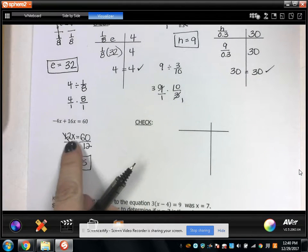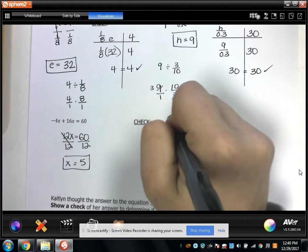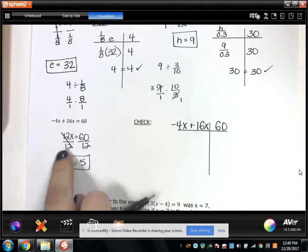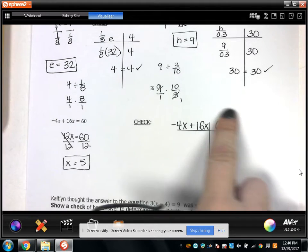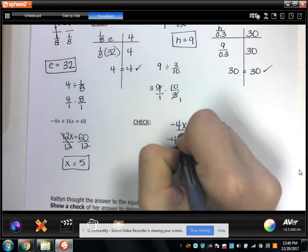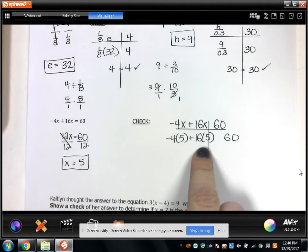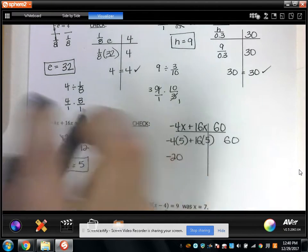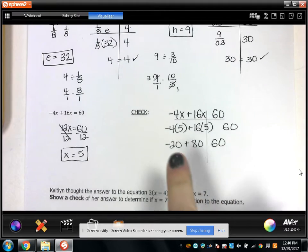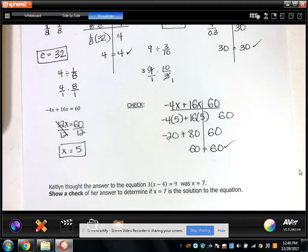Now when you do your check here, you don't want to write 12x equals 60 on this check line. You want to write negative 4x plus 16x equals 60. The reason you want to do that is maybe when you're solving this, you combine like terms incorrectly. The check is supposed to tell you if you made any mistakes. So you want to start with the original equation. Plug in 5 two times. Notice I didn't combine like terms because that could have been where I made my mistake. Then evaluate. So 16 times 5 is 80. Then say to myself, negative 20 plus 80 is 60. 60 equals 60. Check.